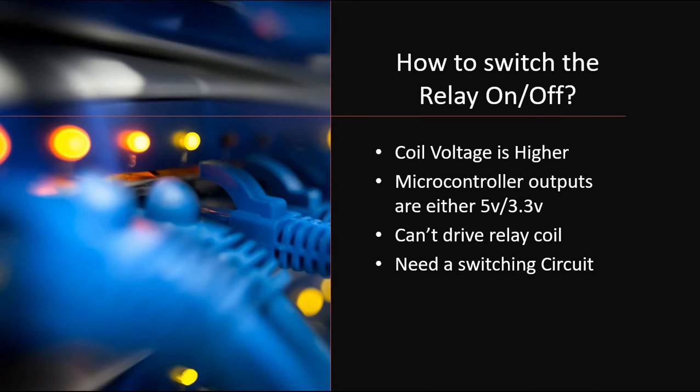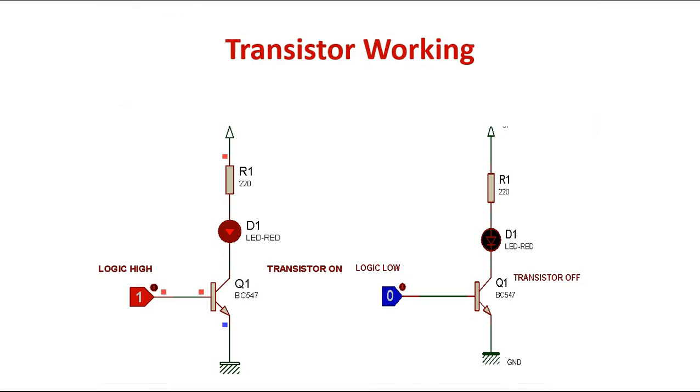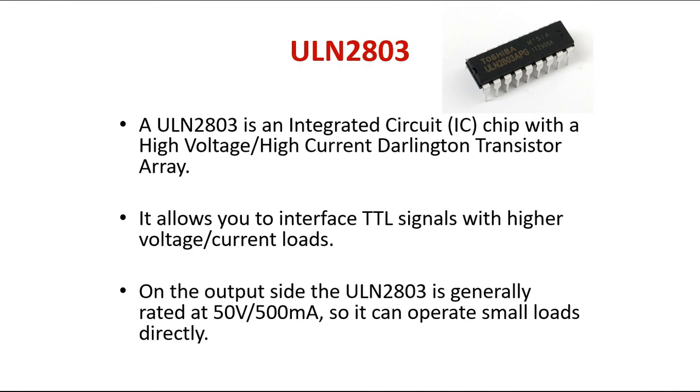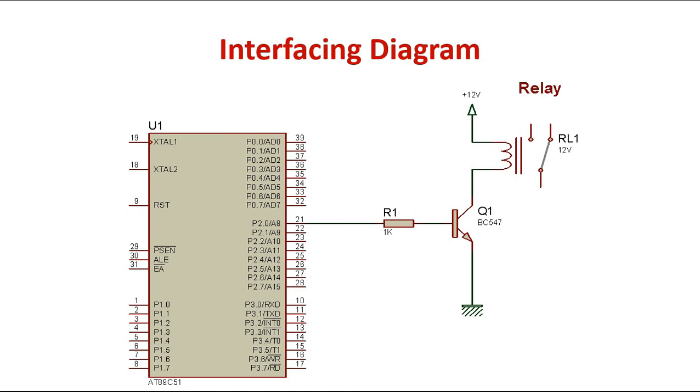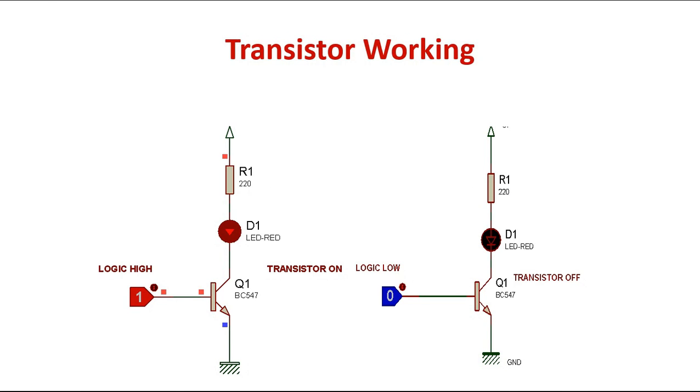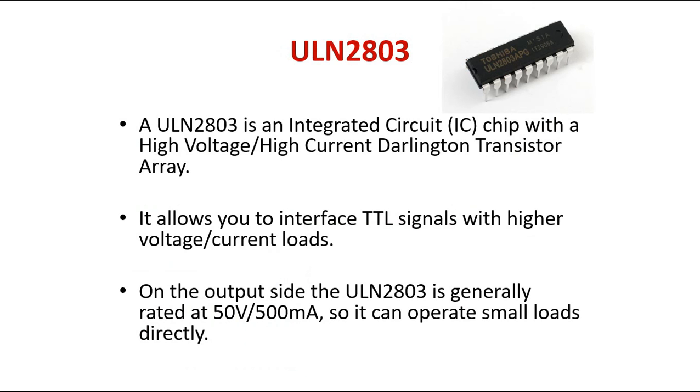Let us see what is that driver IC we use. So I am providing you all these presentations, so it is clear into it pretty much. So this is the driver IC that we usually prefer to use, it is called as ULN2803. It is an integrated circuit or IC which has got eight channels for interfacing, means the same IC can be used to turn on and off eight relays at a time with microcontroller.